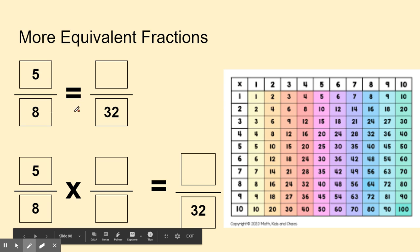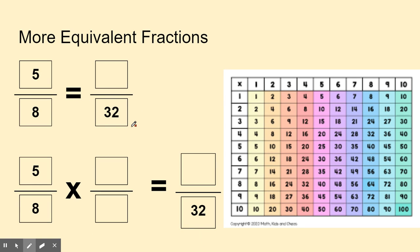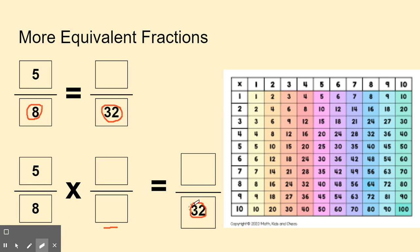One more practice problem: we need to find an equivalent fraction that has 32 as a denominator, equal to five-eighths. So five-eighths equals blank over 32. We need to find out what number they multiplied by 8 to get 32 — eight times what number equals 32? Look at our multiplication chart, find your eight, and count how many times eight goes into 32: four times.